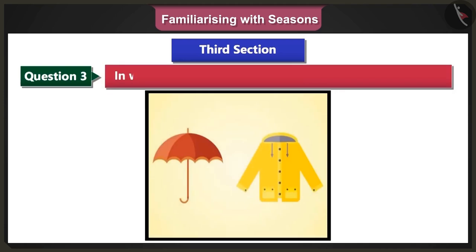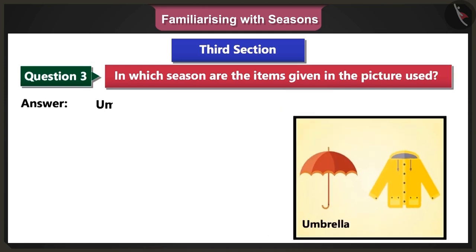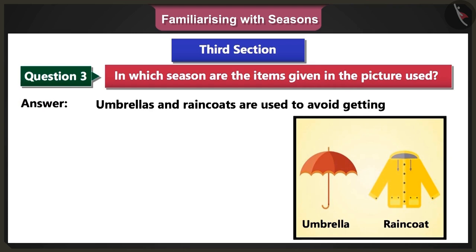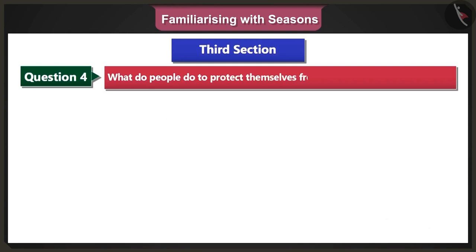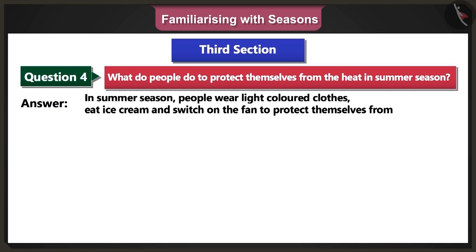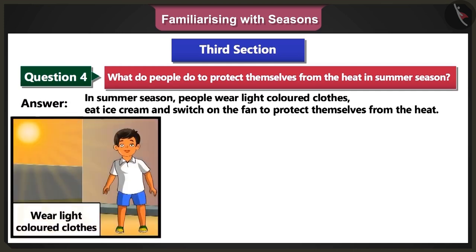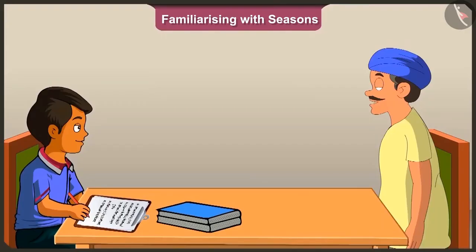Third question: In which season are the items given in the picture used? Answer: Umbrellas and raincoats are used to avoid getting wet during the monsoon season. Fourth question: What do people do to protect themselves from the heat in summer season? Answer: In summer season, people wear light-coloured clothes, eat ice cream, and switch on the fan to protect themselves from the heat.